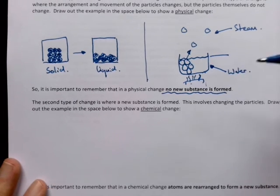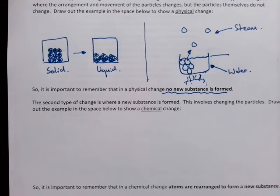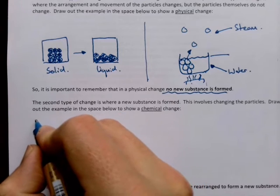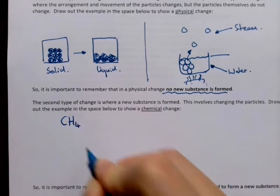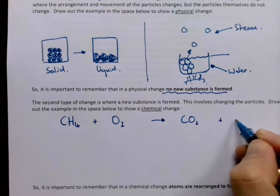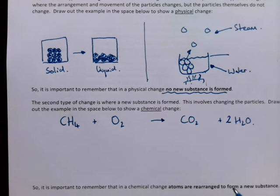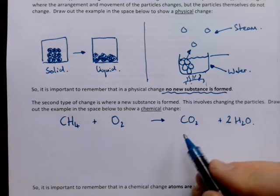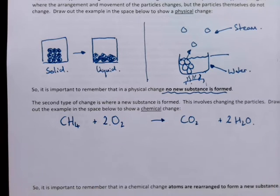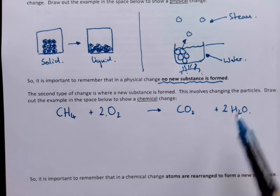The second type of change is where a new substance is formed — that's a chemical change. Physical change means no new substance; chemical change means a new substance is produced. This involves changing the particles themselves. For example, methane (CH4) reacting with oxygen (O2) produces CO2 and H2O. Balancing this gives CH4 + 2O2 → CO2 + 2H2O. I started with methane and oxygen and ended up with carbon dioxide and water — those are new substances.